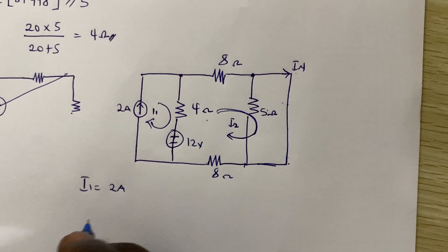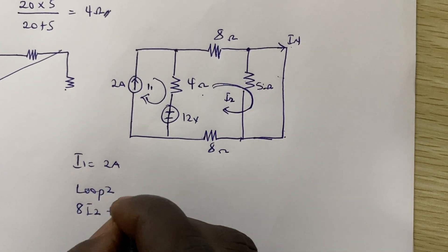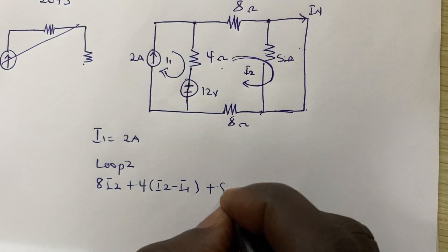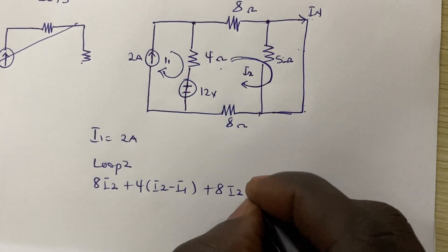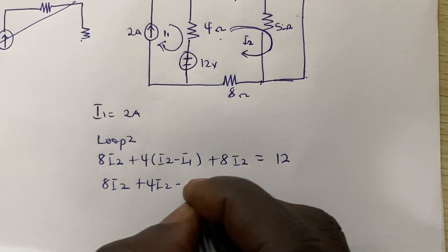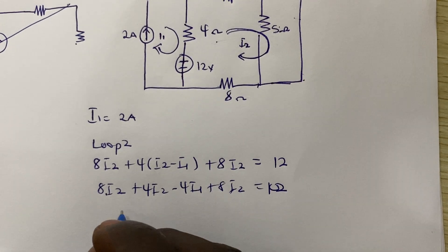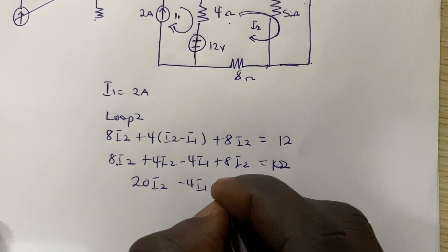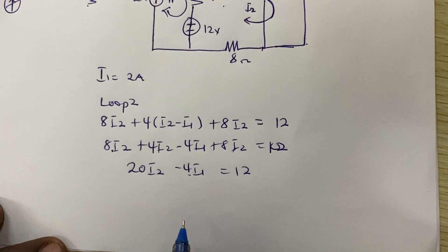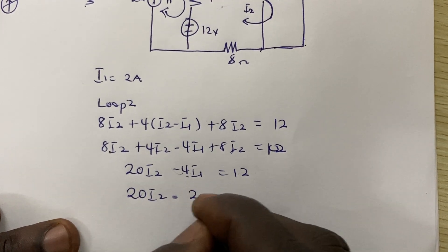For loop 2, we get: 8·I2 + 4·(I2 − I1) + 8·I2 = 12. Expanding: 8·I2 + 4·I2 − 4·I1 + 8·I2 = 12, which simplifies to 20·I2 − 4·I1 = 12. Since I1 = 2, we get 20·I2 − 8 = 12, so 20·I2 = 20.